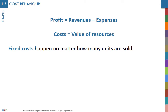Some costs happen no matter how many products are sold. They do not change with changes in the level of activity. These are fixed costs. For example, if you own a car, you have to pay insurance each month no matter how much you drive. The same is true with an ice cream factory that has a mortgage on its property. The company has to make the same mortgage payments regardless of how much ice cream it produces.